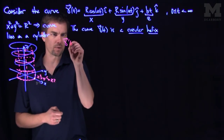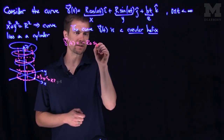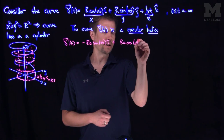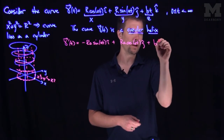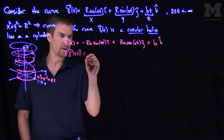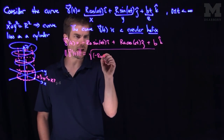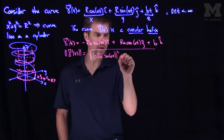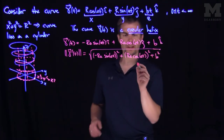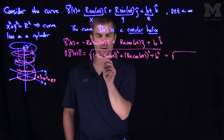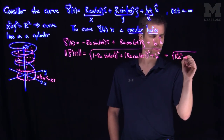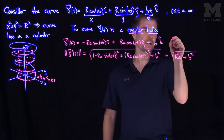Let's compute gamma prime of t. Gamma prime of t is negative ra sine(at) î plus ra cosine(at) ĵ plus b k̂. The magnitude of this derivative — the speed of the curve — is the square root of (ra sine(at))² plus (ra cosine(at))² plus b². This simplifies to the square root of r²a² plus b², so this curve has constant speed.